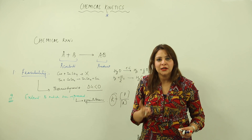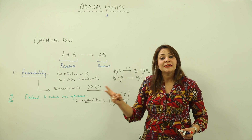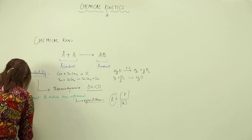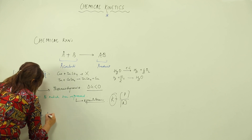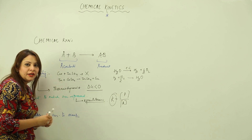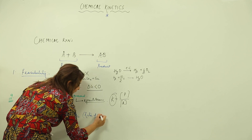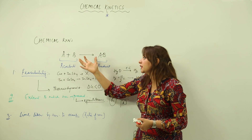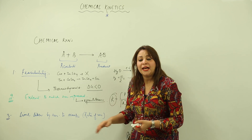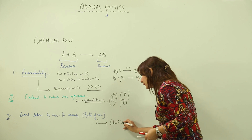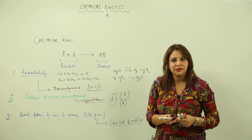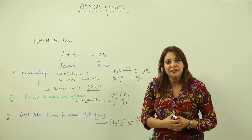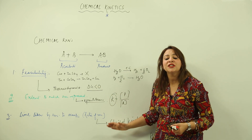So this is our second concern. When studying any chemical reaction, first is feasibility — whether the reaction is going to take place or not. Second is the extent to which the reaction will occur. Third, our major area of concern is the time taken by the reaction to occur, and this is called the rate of reaction. Chemical kinetics tells us how much time will be taken for the reactants A and B to get completely converted into AB. Chemical kinetics is a branch of chemistry that deals with the study of the time taken by reactants to get completely converted into the product — this is the reason we study chemical kinetics.